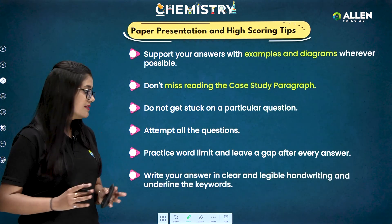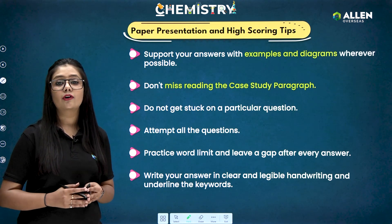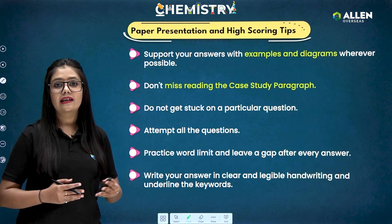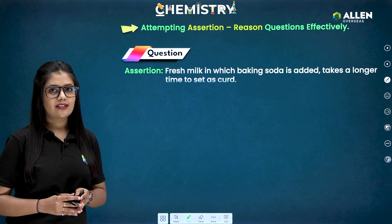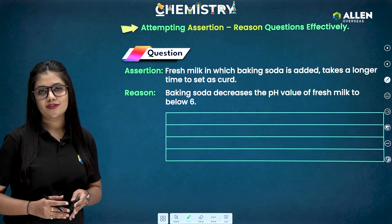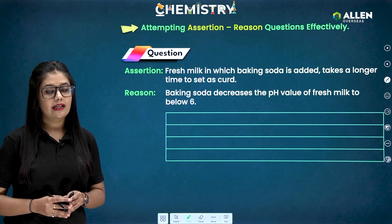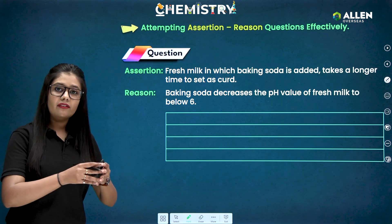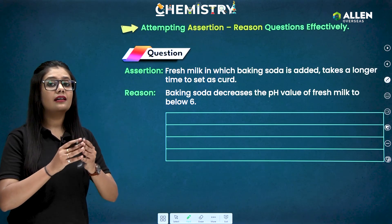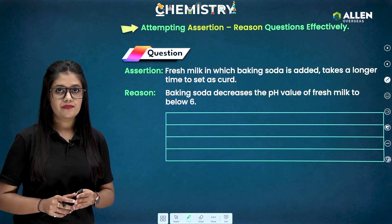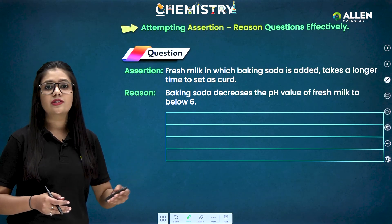Write your answer in clear and legible handwriting and underline the keywords — it makes your answer sheet more presentable and easier for the examiner to read. For attempting assertion and reason questions effectively: read the assertion statement separately, check if it is correct or incorrect, then read the reason statement and check it. If the reason statement is also correct, link the assertion with the reason using the terminology 'because' — this helps give the correct judgment.